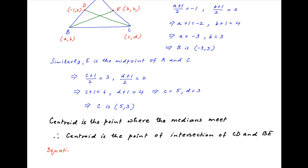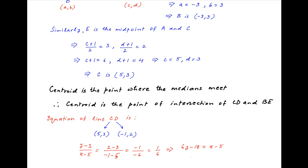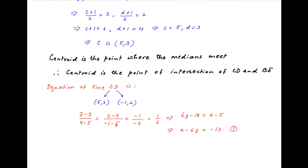The equation of line CD, which is the line joining (5, 3) and (-1, 2), can be written as (y - 3) / (x - 5) = (2 - 3) / (-1 - 5). The right-hand side equals 1/6. Cross-multiplying, we get 6y - 18 = x - 5, which implies x - 6y = -13. Let's call this equation 1.